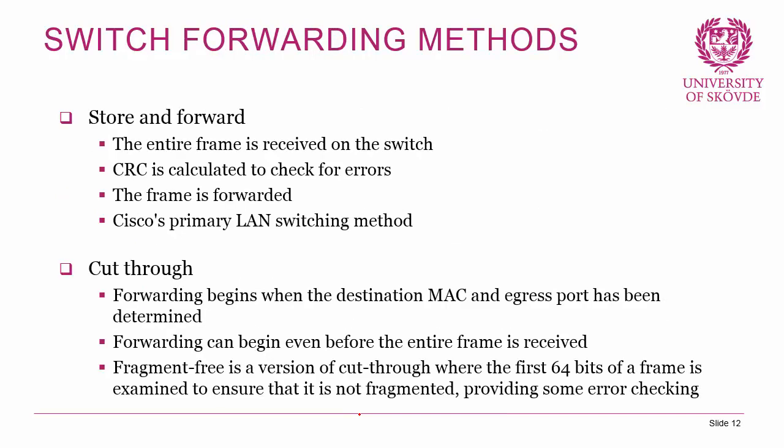There are two different approaches to how switches forward traffic. The first is store-and-forward switching, where the switch receives the entire frame, then performs a cyclic redundancy check — a technique where the switch calculates a checksum of the whole packet and matches it against the checksum at the end of the frame calculated by the sender. If the frame is error-free, it is forwarded. This is Cisco's primary LAN switching method and their suggested approach for local area network switches.